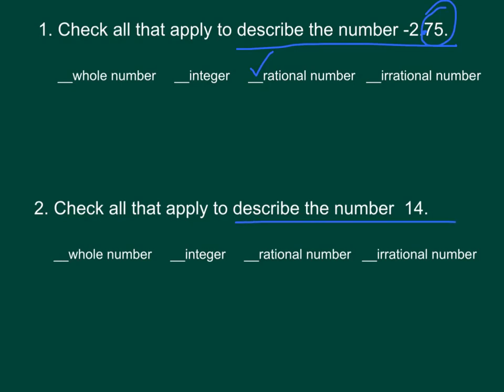Check all that apply to describe the number 14. Well, 14 is actually a whole number. It also makes it an integer because those are positive or negative whole numbers. And then that also makes it a rational number.